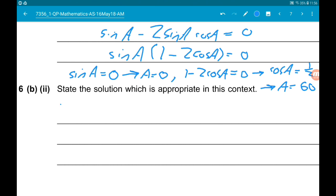So remember, A is an angle in a triangle. If A is 0 degrees, that makes absolutely no sense. So the solution that makes sense is 60 degrees.